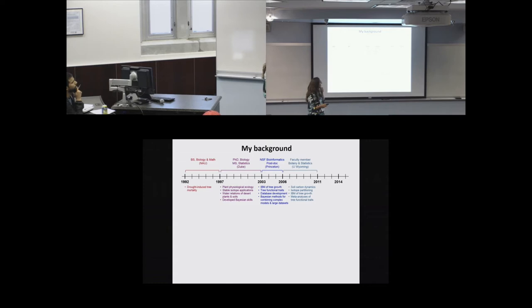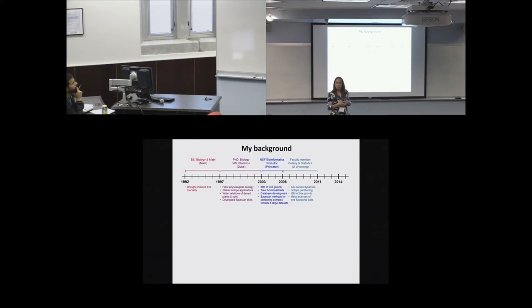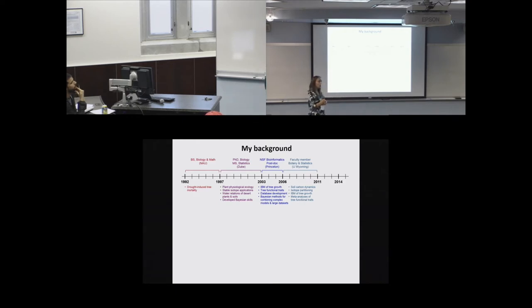I started working in forests, synthesizing existing data sets and developing process models of how trees grow and die. During this time I started developing large databases of plant functional traits, and I really expanded my Bayesian modeling skills via my own experiences, collaborations, leading seminars, reading articles, and working on a variety of collaborative projects.